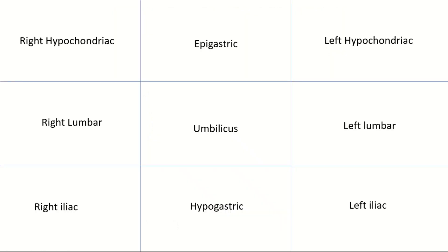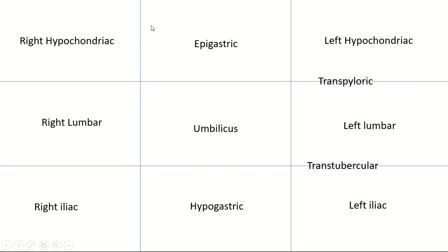On this white background I've drawn the same diagram divided into nine regions using two mid-clavicular lines, the transpyloric line, and the trans-tubercular line. Now let's move on to the causes of pain in each region.